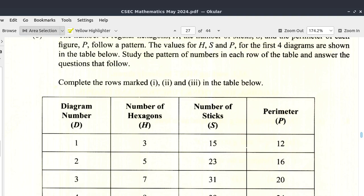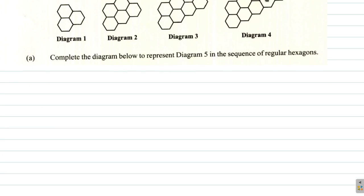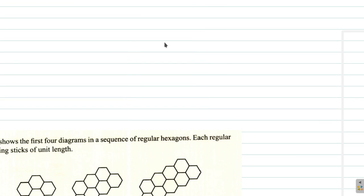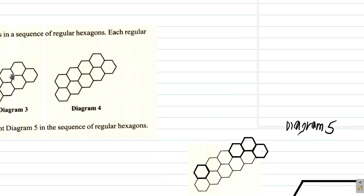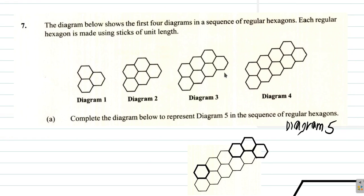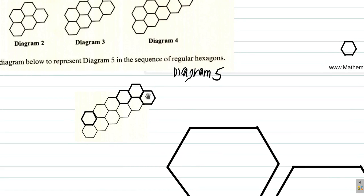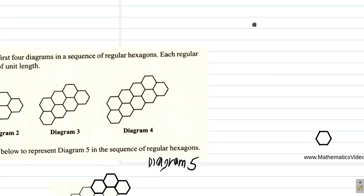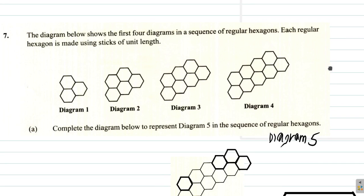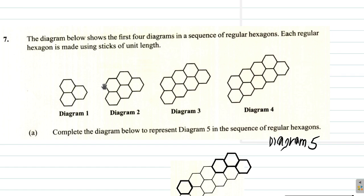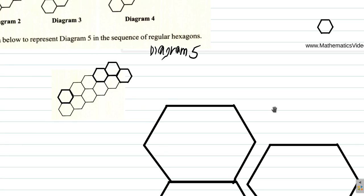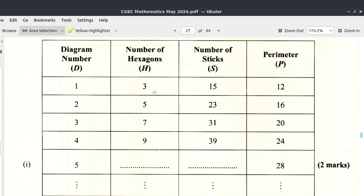I have copied that part of the question over here, and I've worked out some parts of it in order to save time. I'm going to want you to sit down with your paper and make an attempt at working out some of these things. We had done diagram 5 in Part A already. Now they want the number of hexagons from diagram 5.